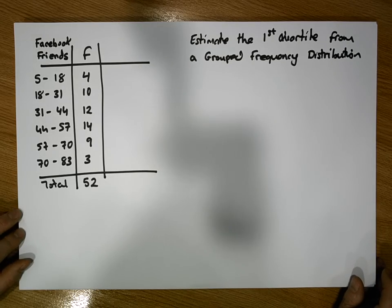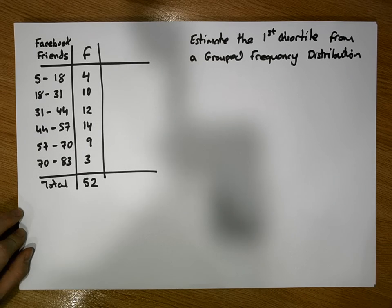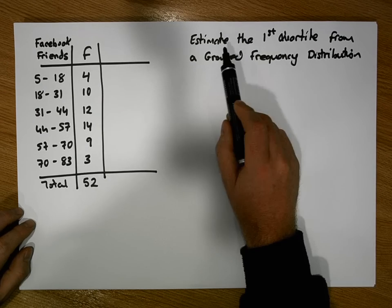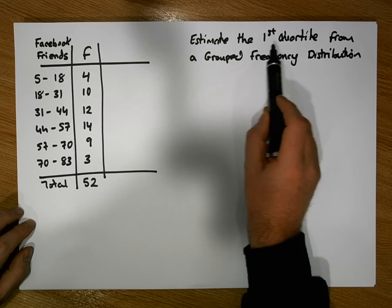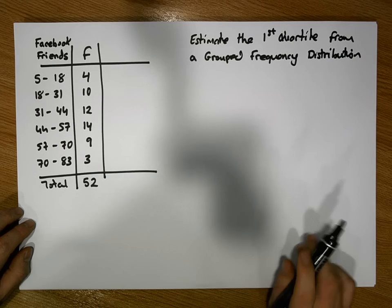Hi guys, this is Jonathan Lambert with the Mathematics Development and Support Service at the National College of Ireland. This short video is going to deal with how to estimate the first quartile from a grouped frequency distribution.